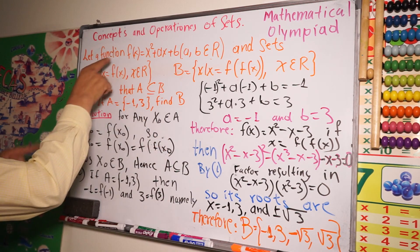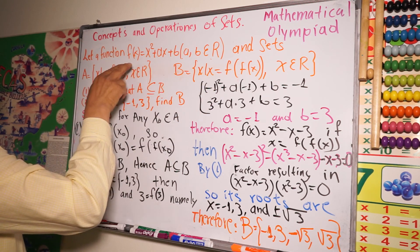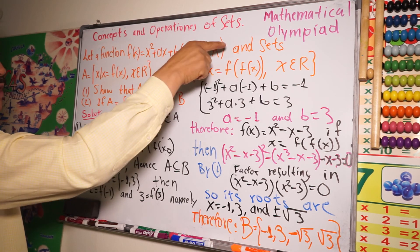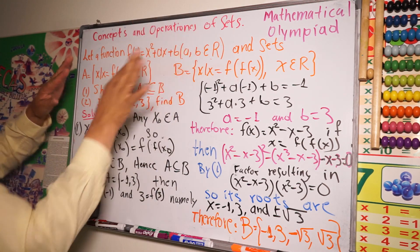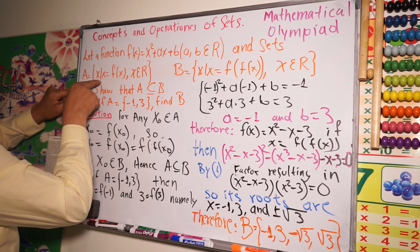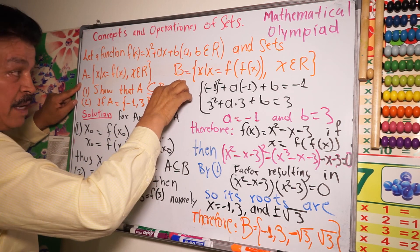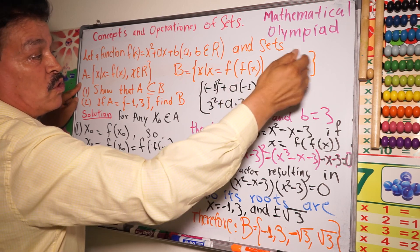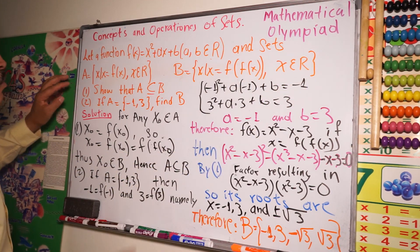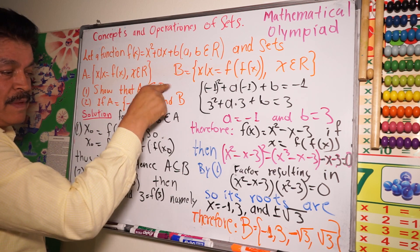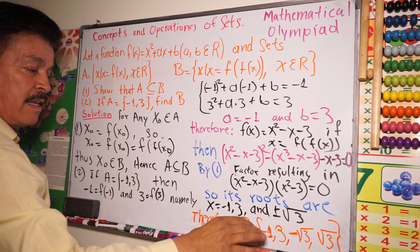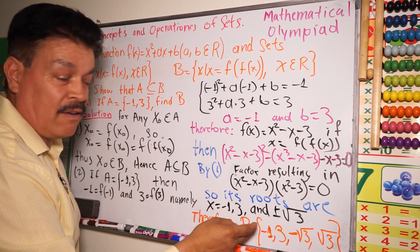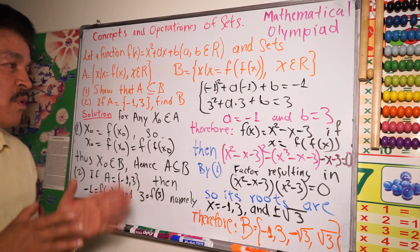All the steps, guys — keep in mind all the data and look for what the question is asking. The function is f(x) equals x² plus ax plus b, where a and b are real numbers. We have three different sets. After solving, we showed that A is a complement of B, and we found all elements of B. This is one of the problems that's coming on the test.